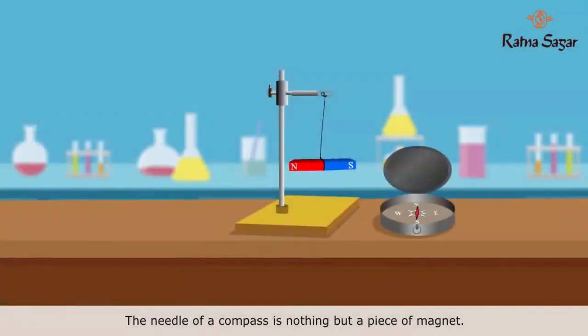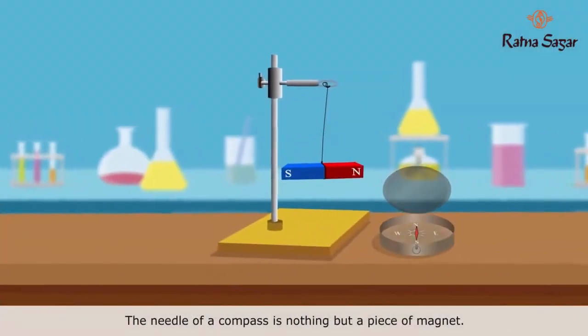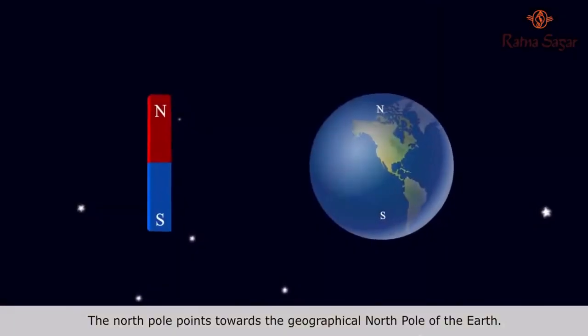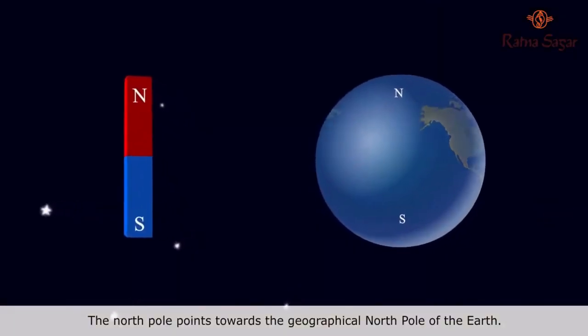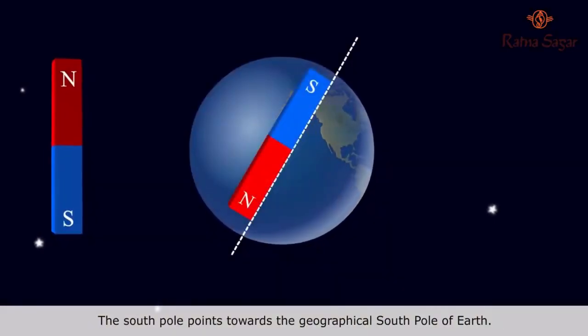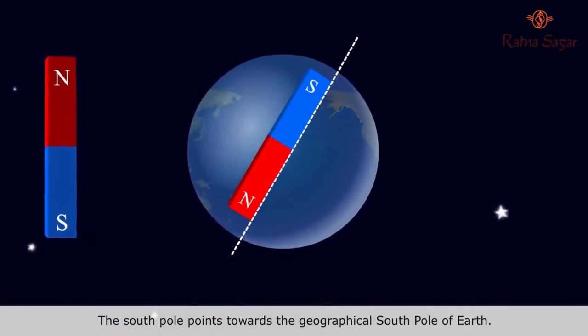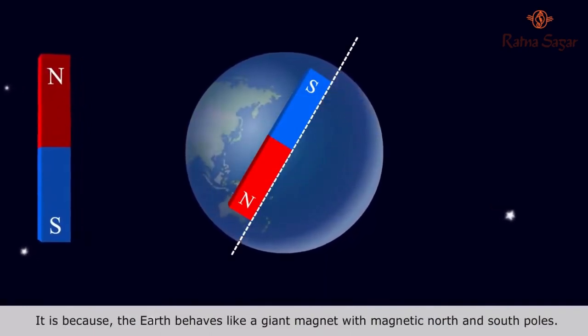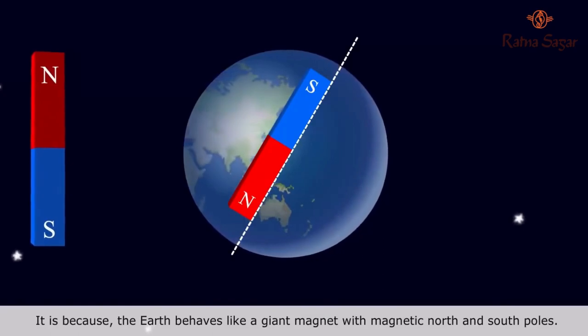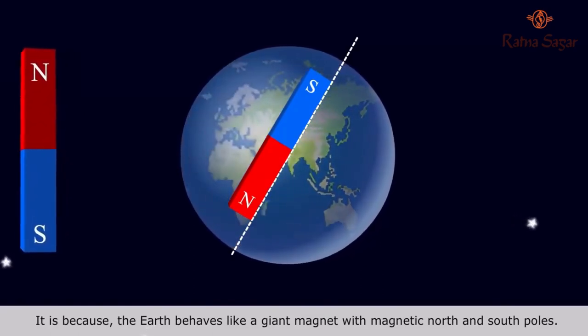The needle of a compass is nothing but a piece of magnet. The North Pole points towards the geographical North Pole of the Earth. The South Pole points towards the geographical South Pole of the Earth. It is because the Earth behaves like a giant magnet with magnetic North and South poles.